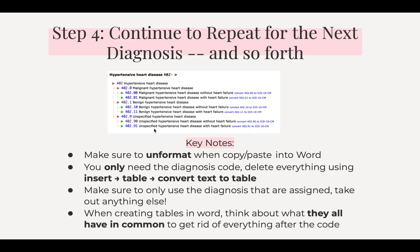Repeat the process for each diagnosis. A few key notes: make sure you unformat when you copy and paste into Word, as this makes it much easier to get just the diagnosis number. Only use the diagnoses that are assigned — delete everything else using Insert Table, Convert Text to Table. Make sure to only keep the diagnosis codes assigned and take out everything else. I want to emphasize that because it saves you a lot of time. When creating tables in Word, think about what all entries have in common to get rid of everything after the code.